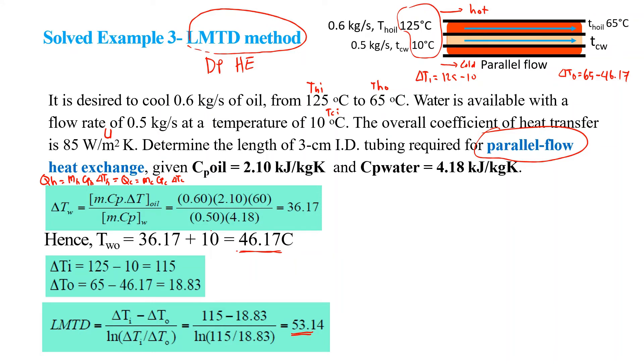Next, since the problem requires the area or the length of the pipe, we need to find out first the total area required. We can use the general equation Q = U·A·LMTD. We have LMTD and U given, so we need to find Q.